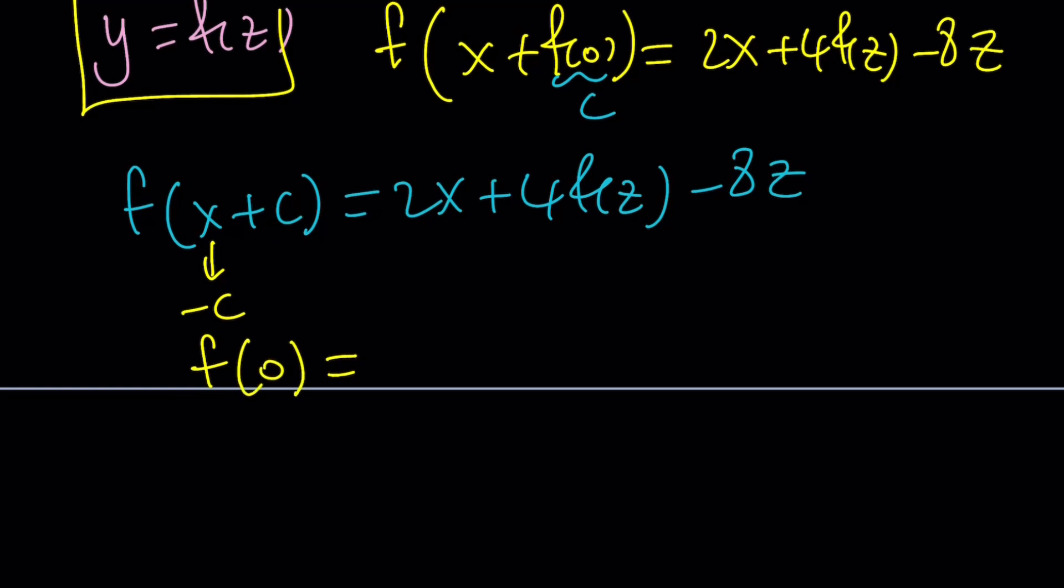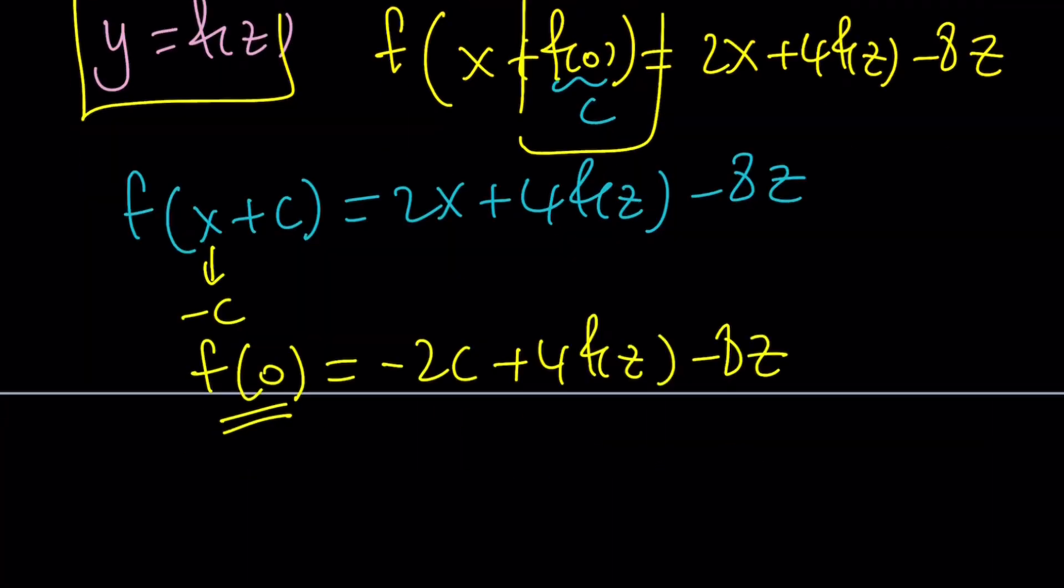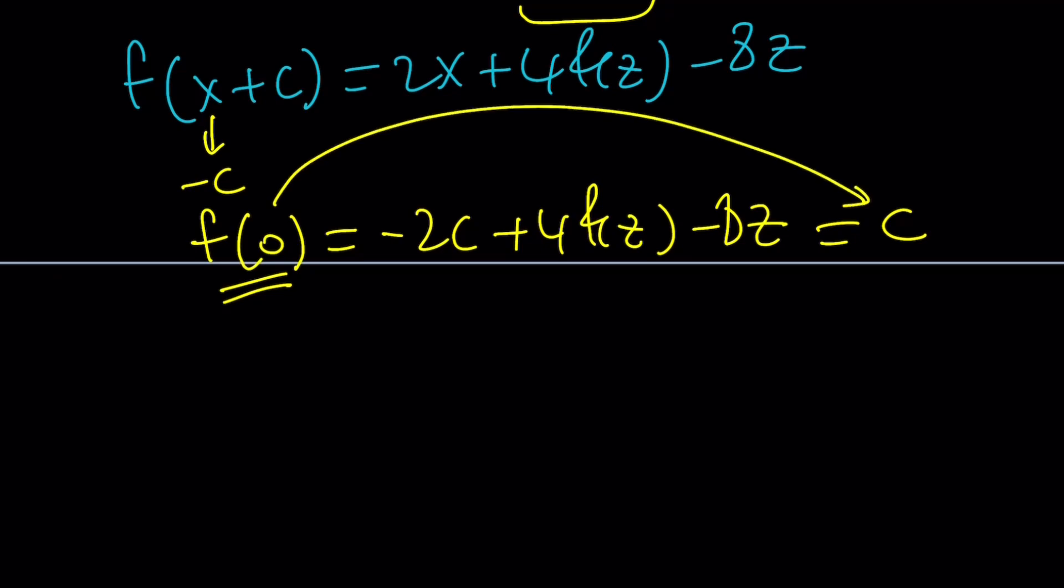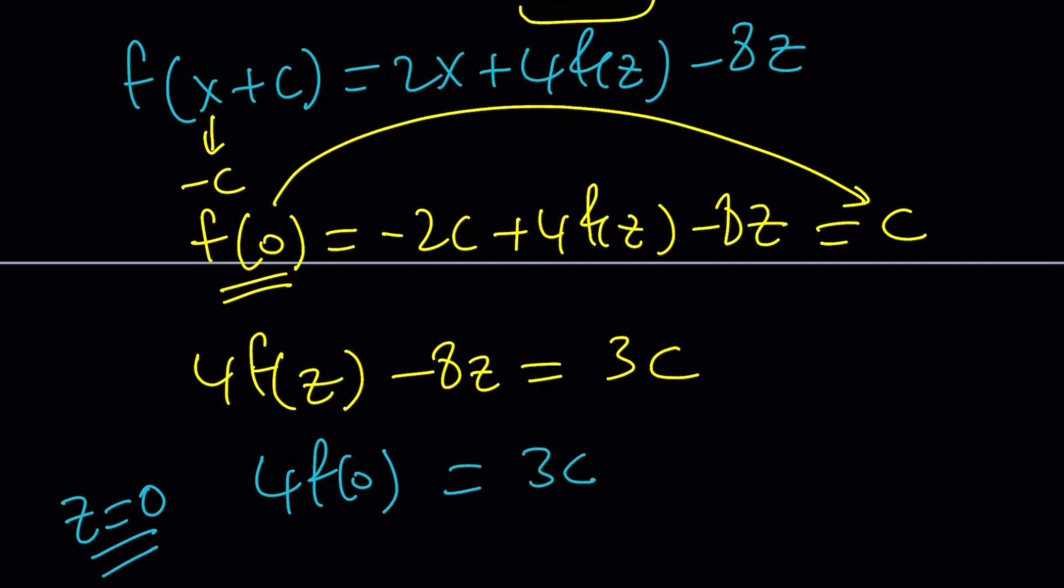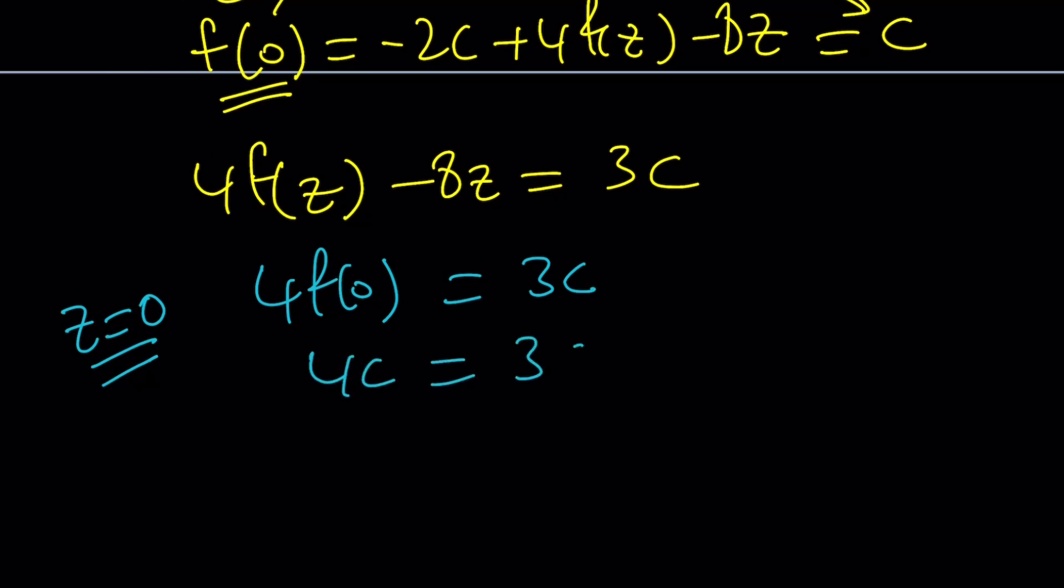So let's replace x with negative c. So we get f of 0 equals 2 times negative c, which is negative 2c plus 4f of z minus 8z. But remember, this is f of 0 and f of 0 is c from here, right? So we can set this whole thing equal to c because f of 0 equals c. Make sense? Do you see what I see? Hopefully you do. Now let's go ahead and put the negative 2c on the right-hand side. That's going to give us 3c. Wait a minute. What can I do with this? Yes. What is c? c is f of 0 and I have f of z. So replace z with 0 and that'll do the trick. Look at that. 4f of 0 minus 0 equals 3c. But f of 0 is c. So 4c equals 3c, which means c is equal to 0.